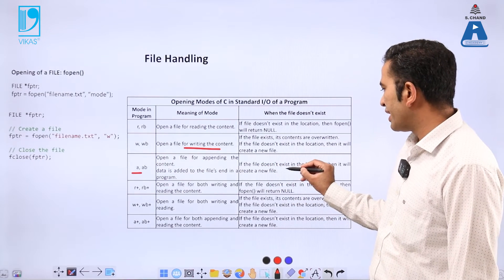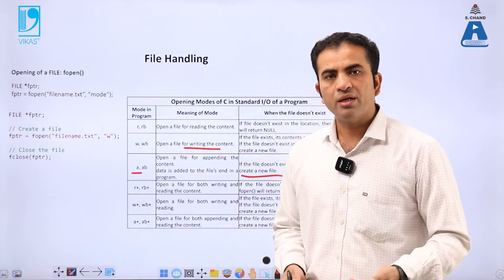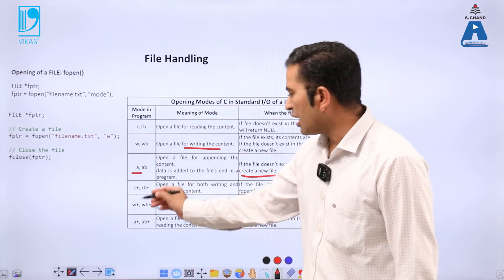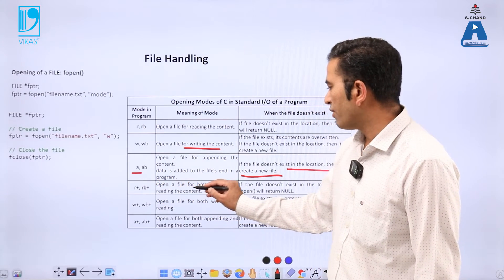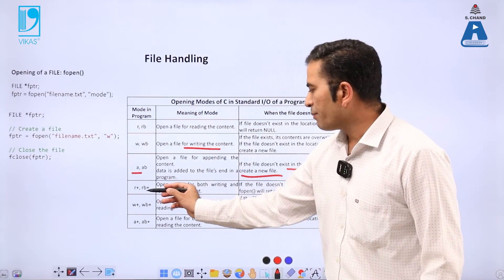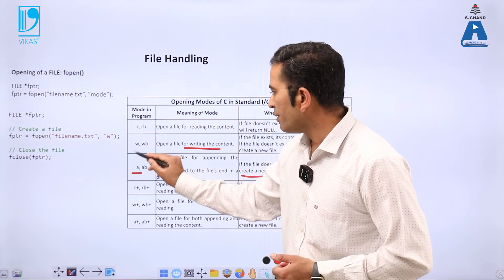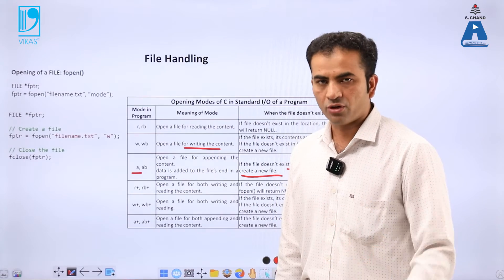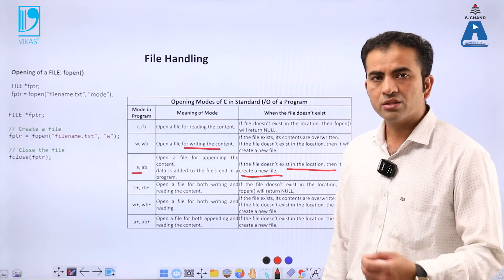If the file does not exist in the location, append mode will create a new file — that is another property of append. Similarly, r+ means open a file for both writing and reading content; w+ means open a file for both writing and reading. rb, wb, ab mean opening the file in binary format, while r, w, a, r+, w+, a+ mean opening the file in text or ASCII format so that a human can easily read it. This completes the explanation of various modes of file handling.